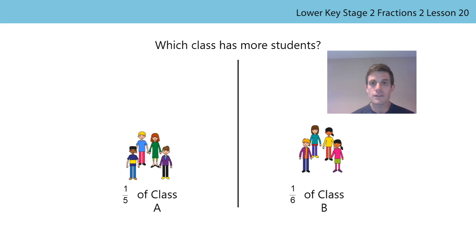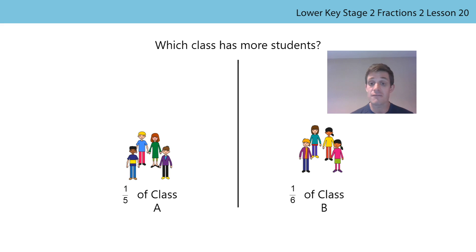To help us with our learning for this week, we're going to have a quick recap because you've seen this problem before. Let's have a look — what's the same and what's different? In both classes, the number of children in a part is the same: there are four children in the fifth of class A and four children in the sixth of class B. What's different? The size of the fraction is different.